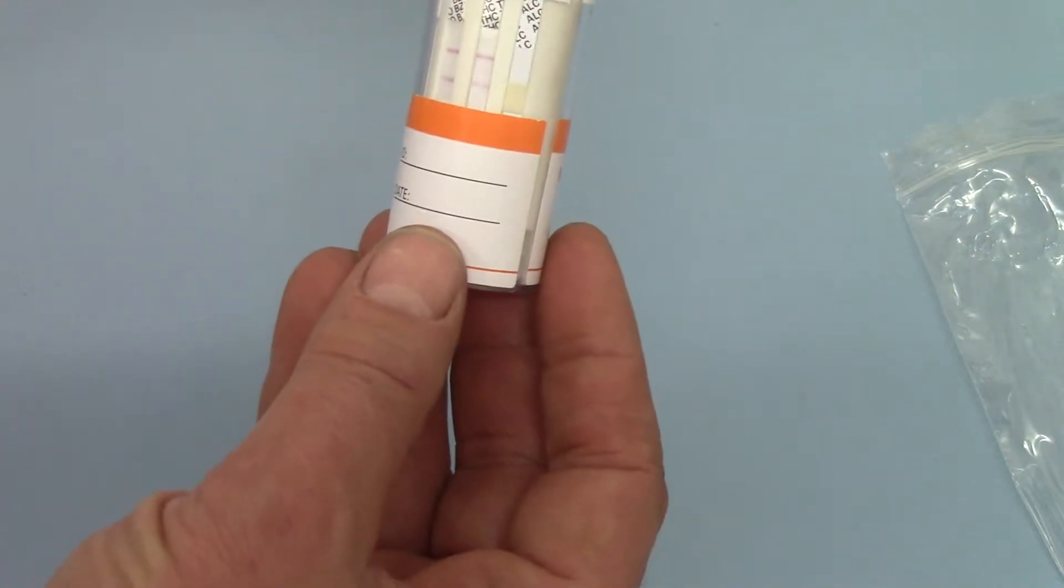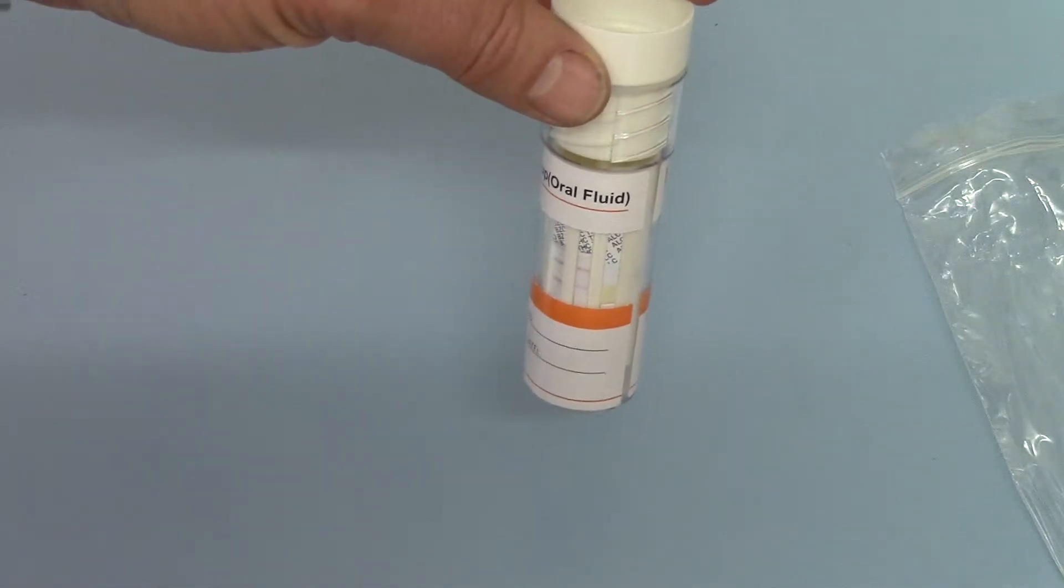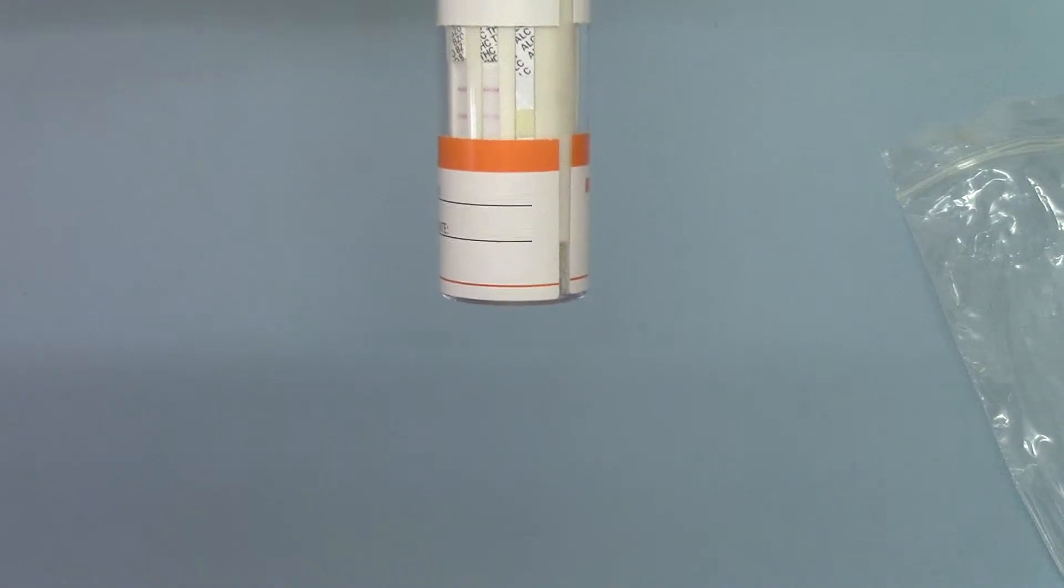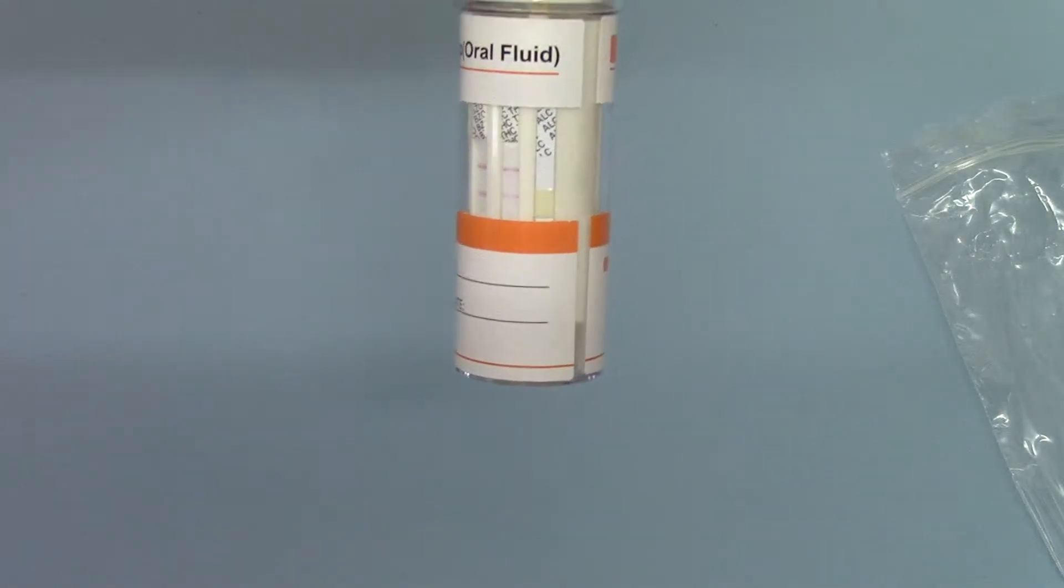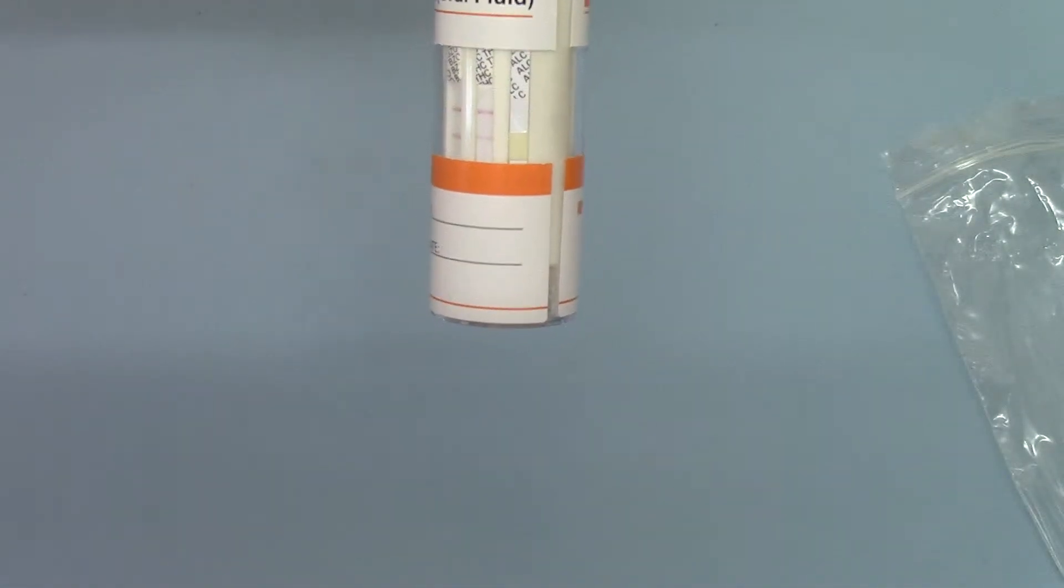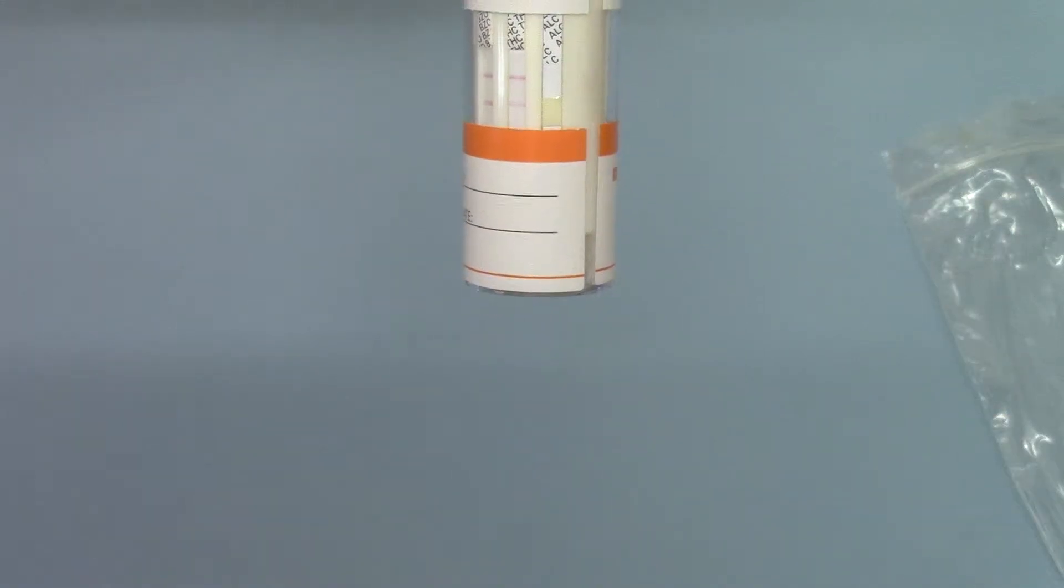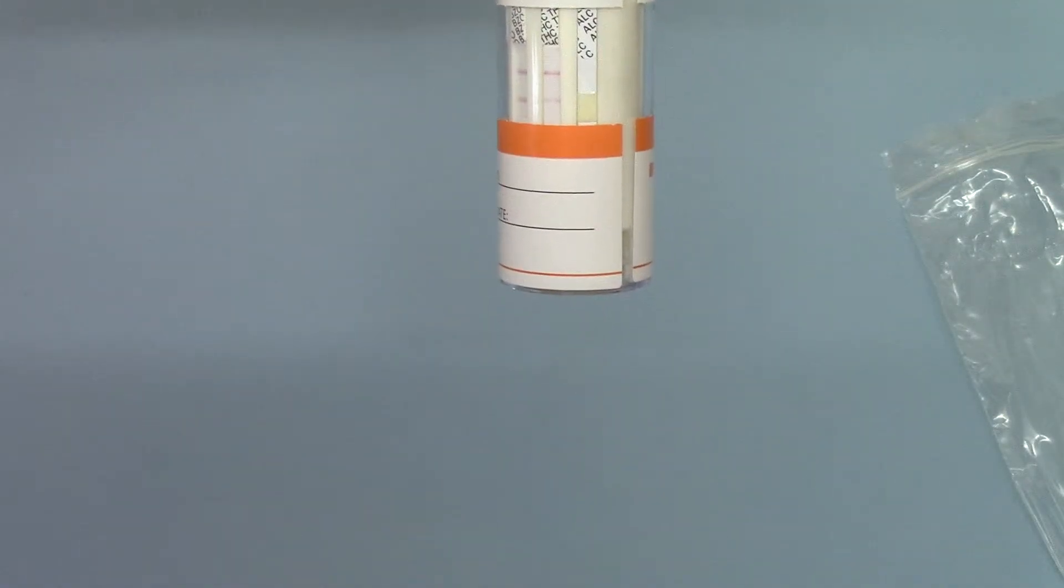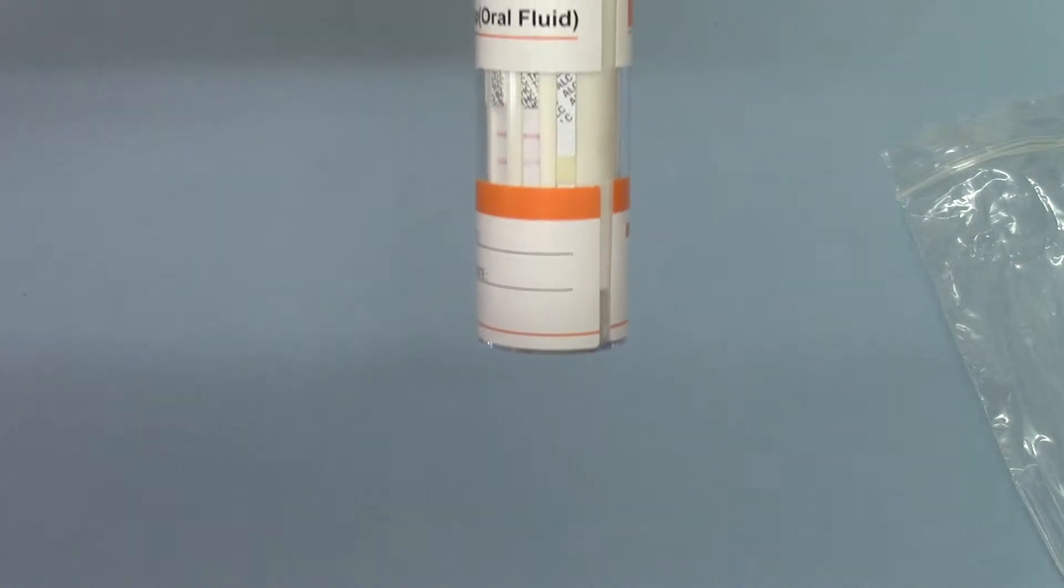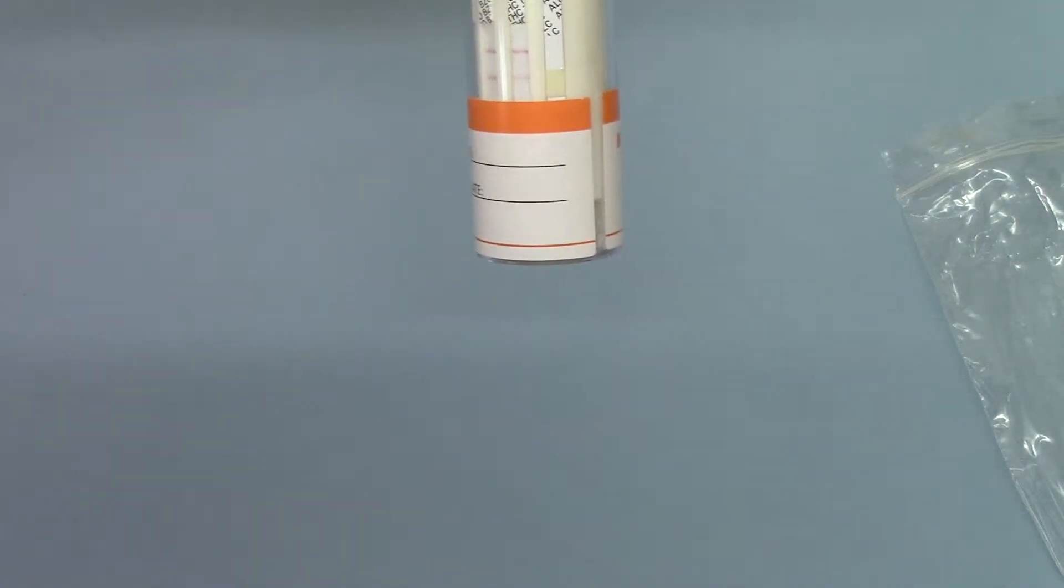And we're just waiting now for that final test. The interpretation of the alcohol, obviously you're looking for a color change on that pad. This one is a negative sample with just the cream baseline color still showing. You would get a duck egg through to a dark blue discoloration, which would match against the sheet given with the tests for the relative blood alcohol concentration.